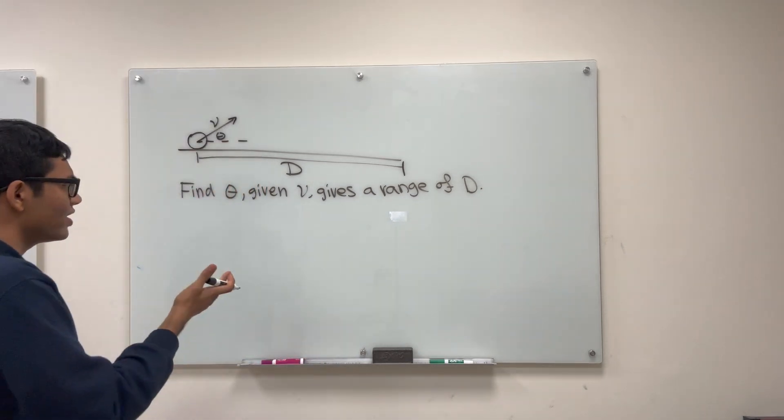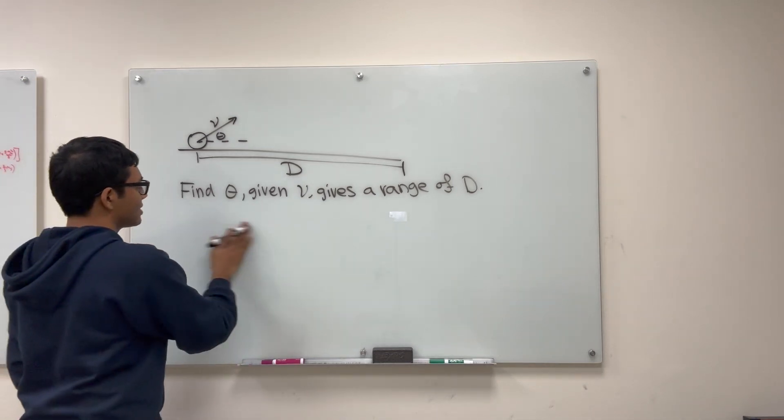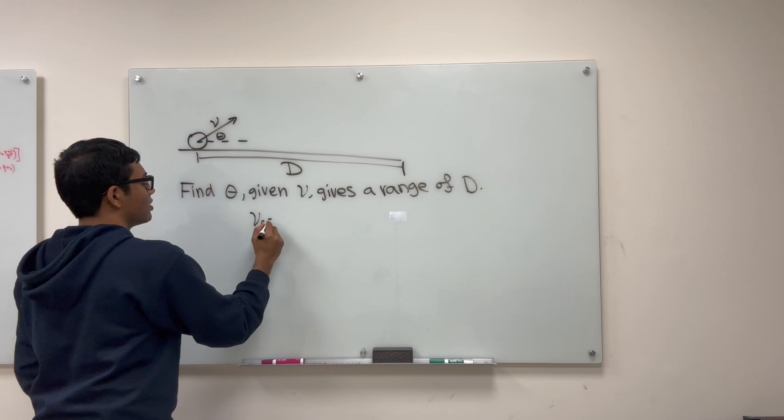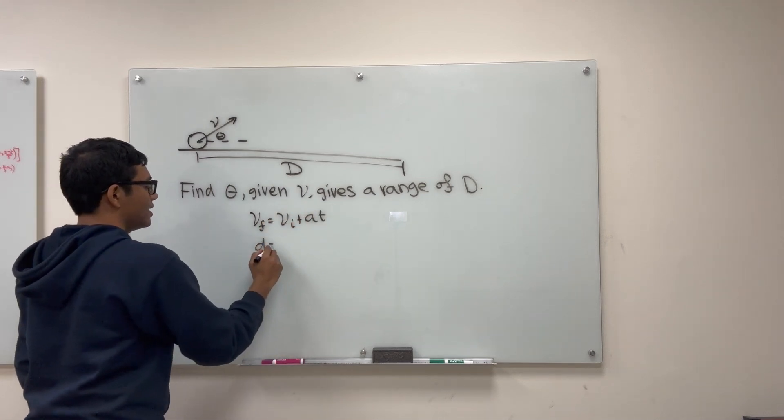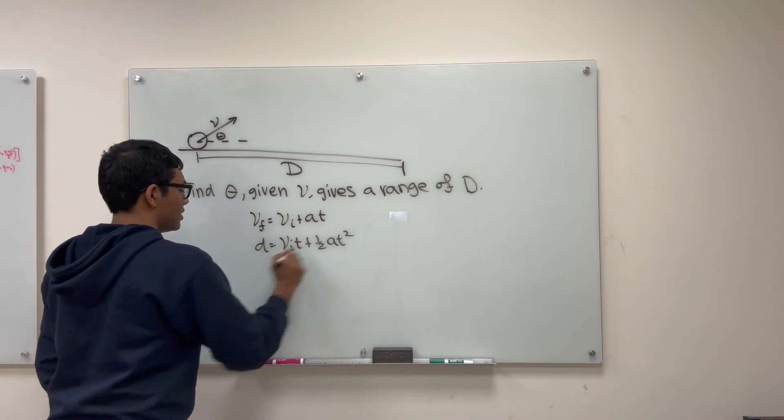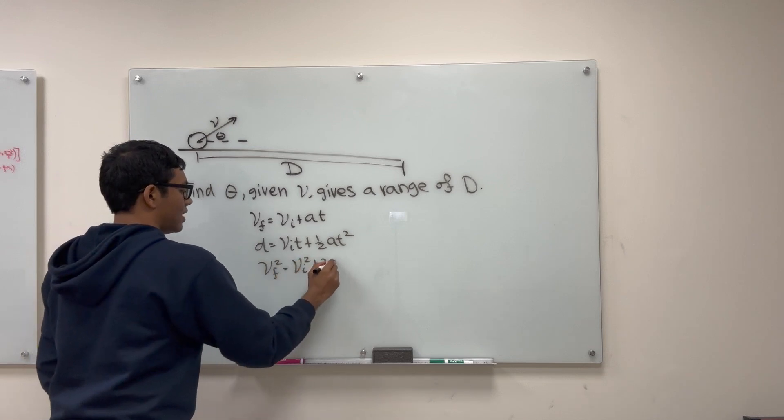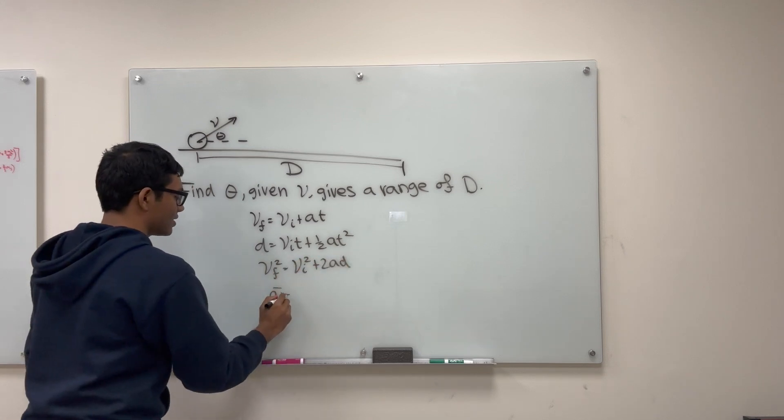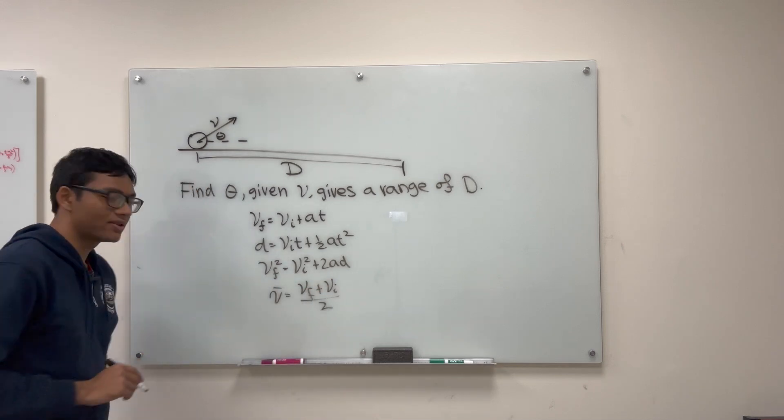This is a fairly typical kinematics problem. We just have to write down the kinematics equations. So let me just write down all four kinematics equations. Vf is vi plus at, d is vit plus one half at squared, vf squared is vi squared plus 2ad, and the average velocity is just the average of the initial and final velocities.